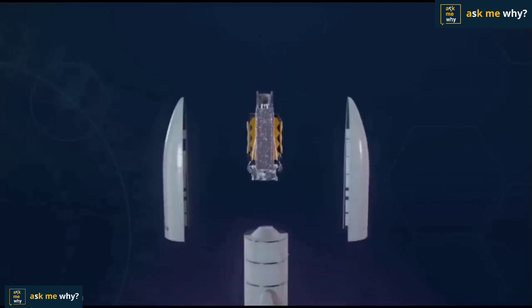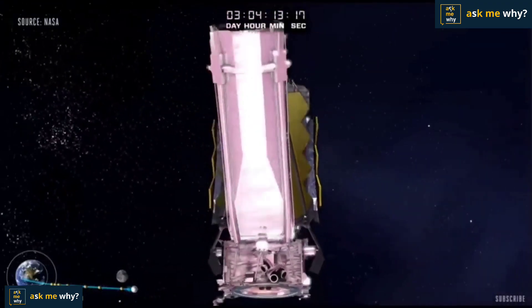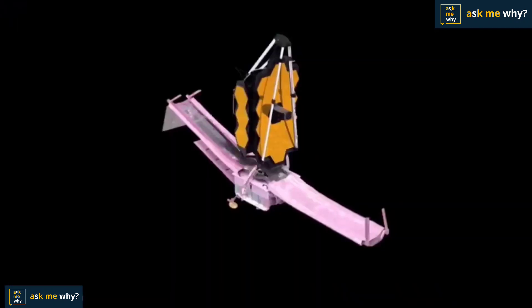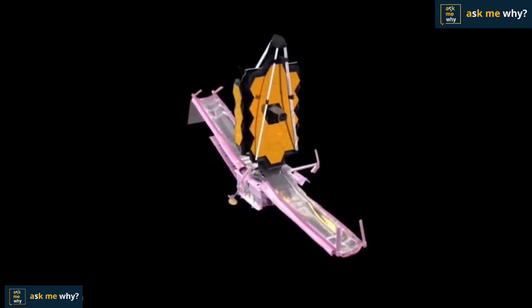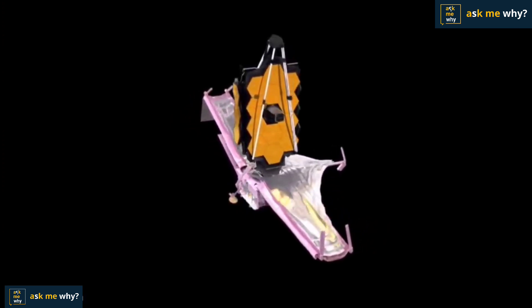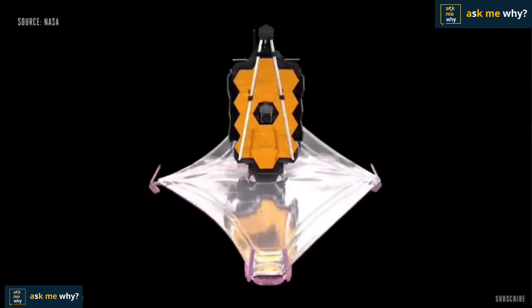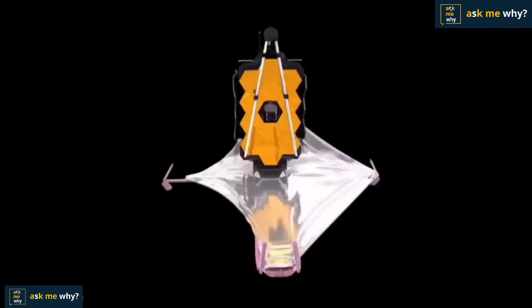But the main task here is to unfold the folded telescope. For it to unfold correctly, cables, pulleys, gears, springs, bearings all have to work correctly. Any difference will damage the whole project. For which a lot of rehearsals have been done here. When the review board checked it, it found 344 failure points. Which means there are 344 chances for it to fail. Just one failure would have wasted 10 billion dollars and 25 years of effort. If any fault occurs when it opens, it is very difficult to fix it because it is too far away for humans to go.